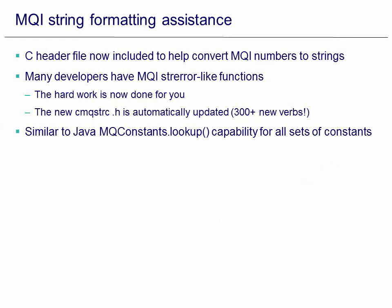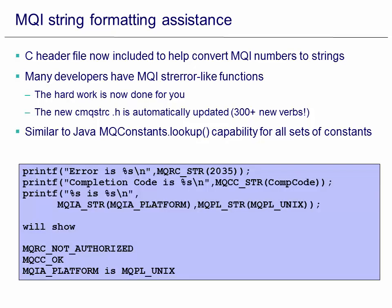Part of the development of this sample program required the implementation of a way to look up the MQI constants and turn them into strings. This has been made available as a new family header file, cmq-sdrc.h, which will be maintained with new versions of MQ. It provides a simple way to map the numbers to a string, a bit like the strerror function, but broader in scope — a bit more like the MQ constants lookup method that we have in the Java interface.